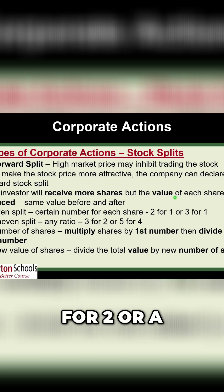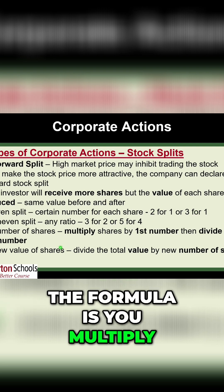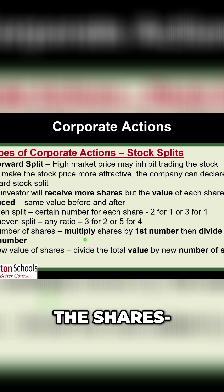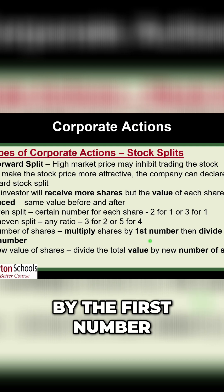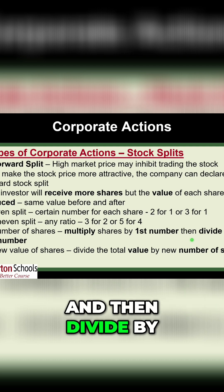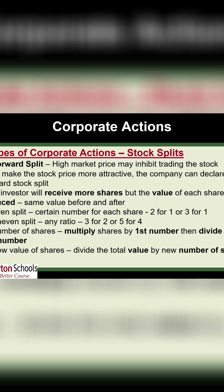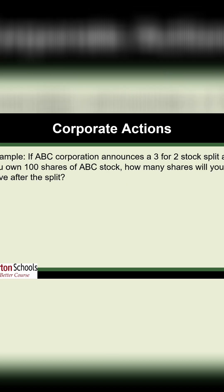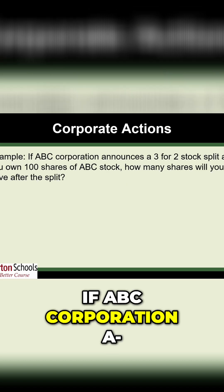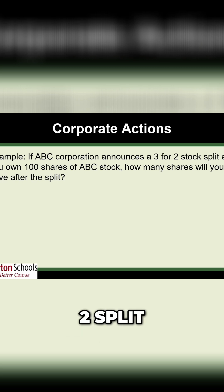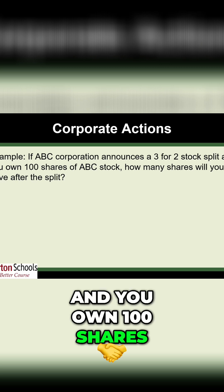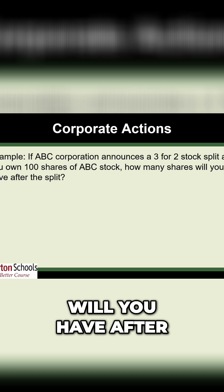You get a three for two or a two for one split. The formula is: multiply the shares by the first number, then divide by the second number. So if a corporation announces a three for two split and you own 100 shares, how many shares will you have after the split?